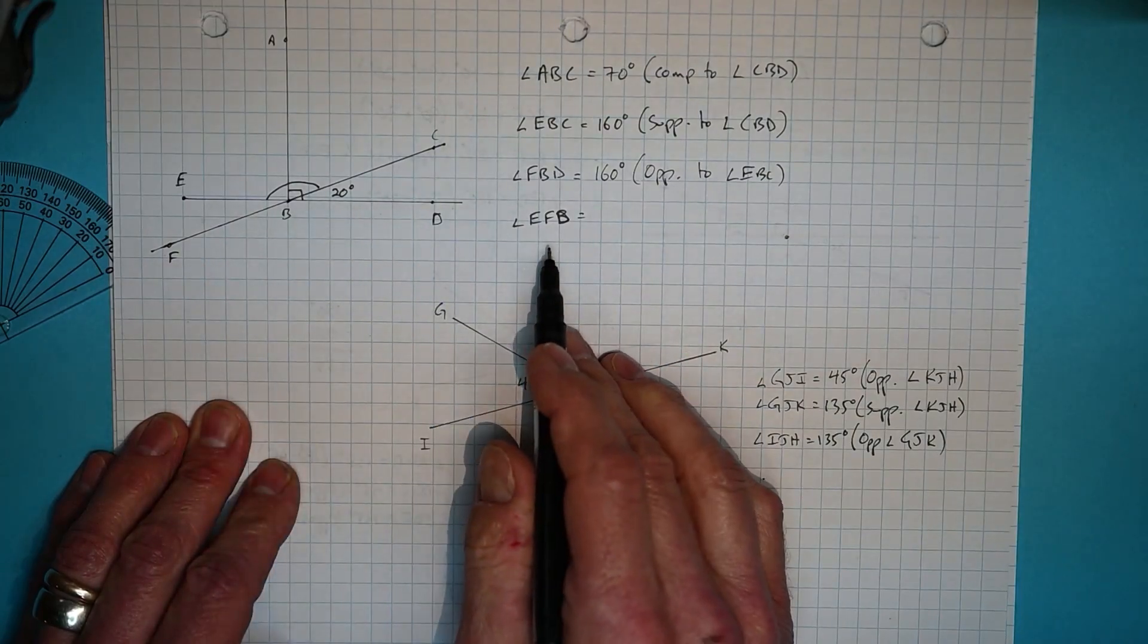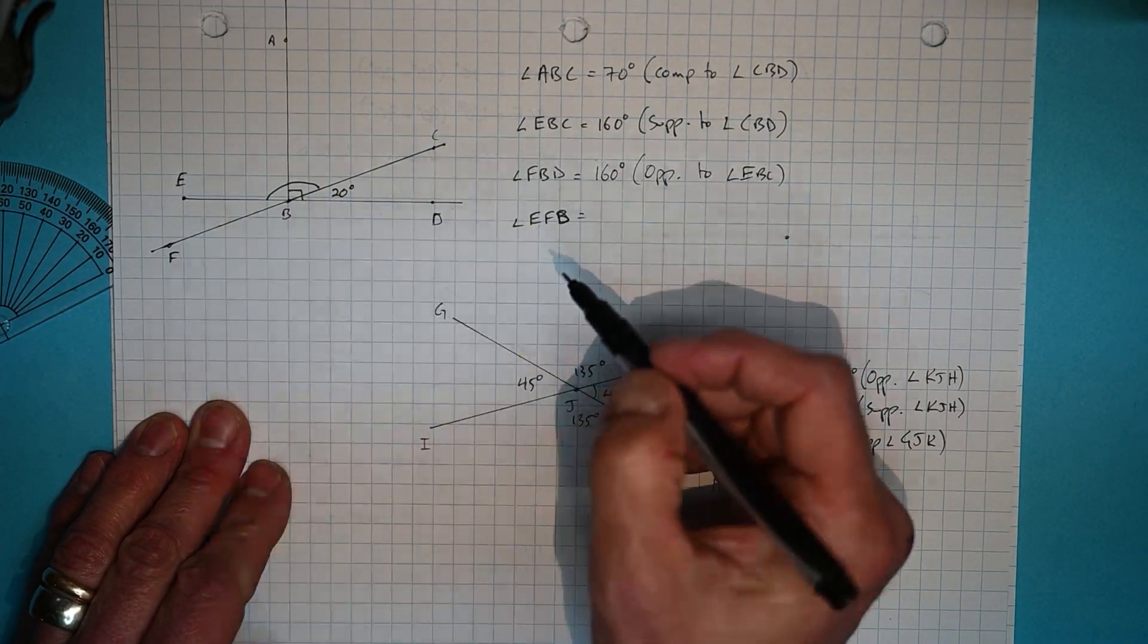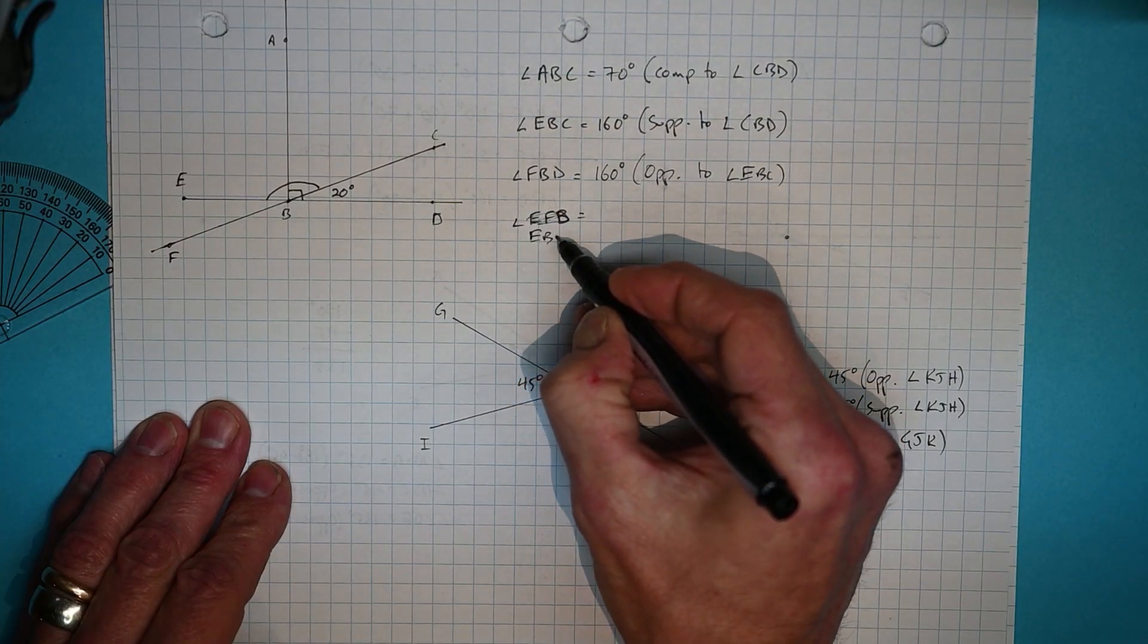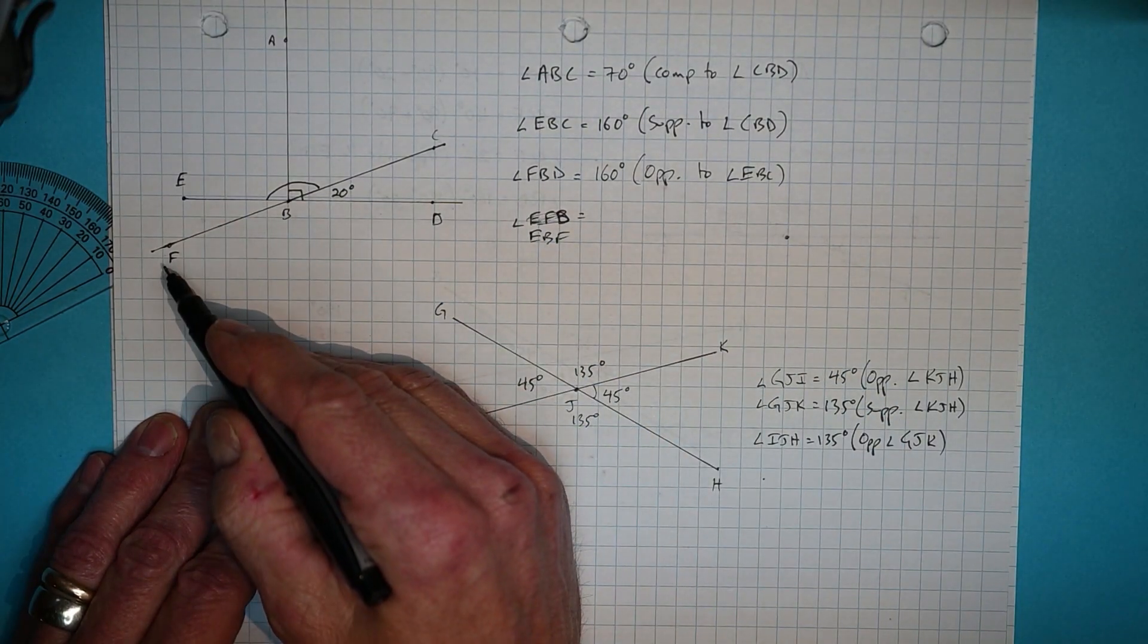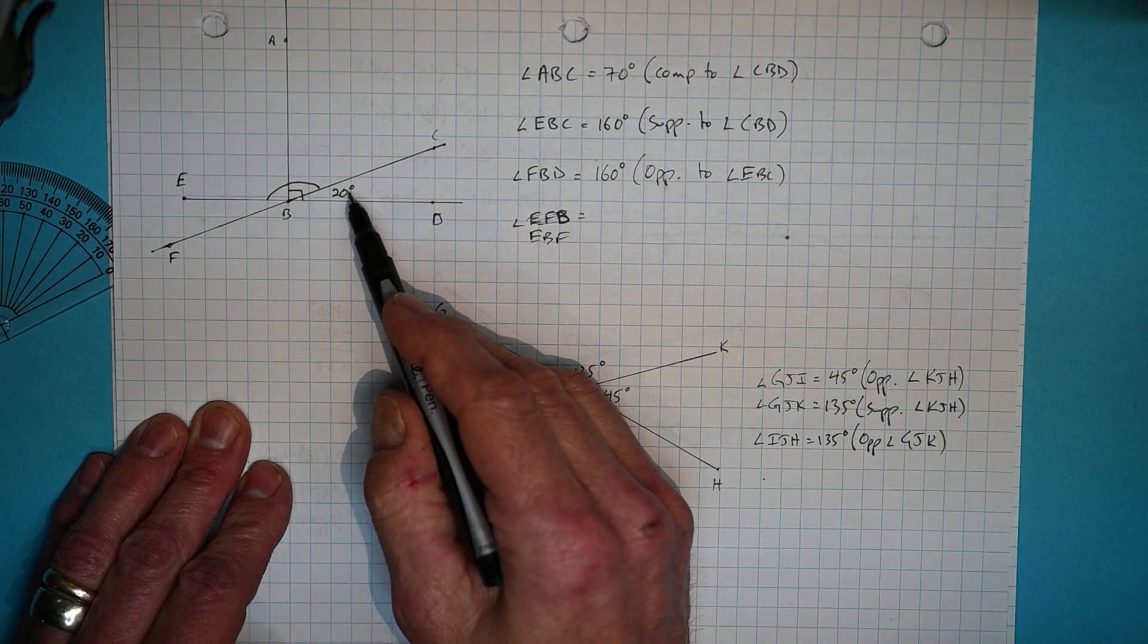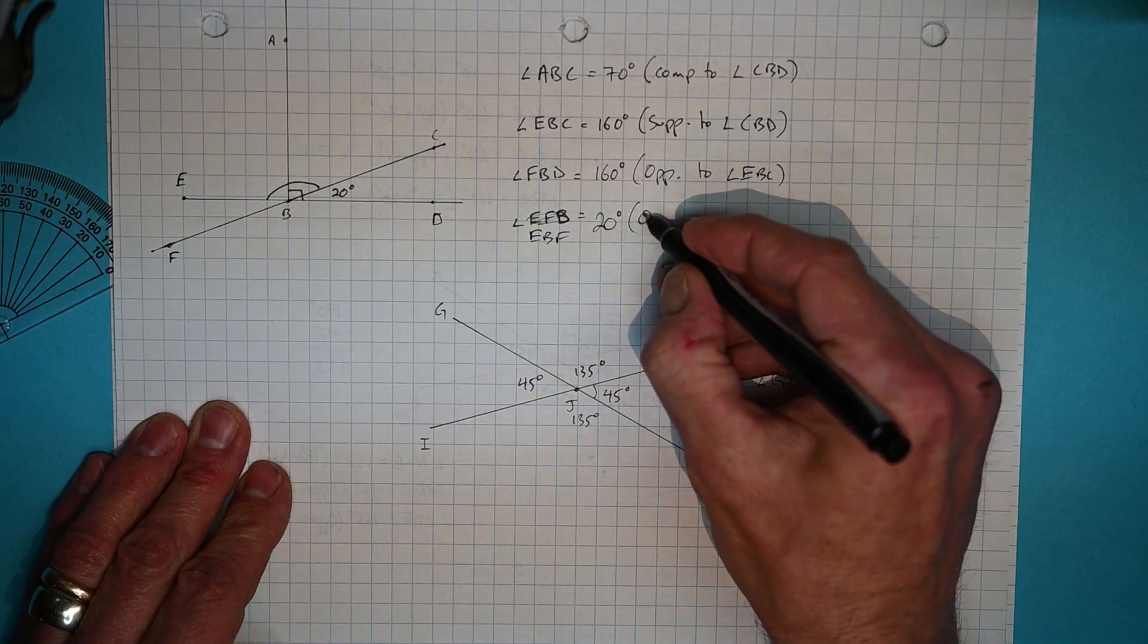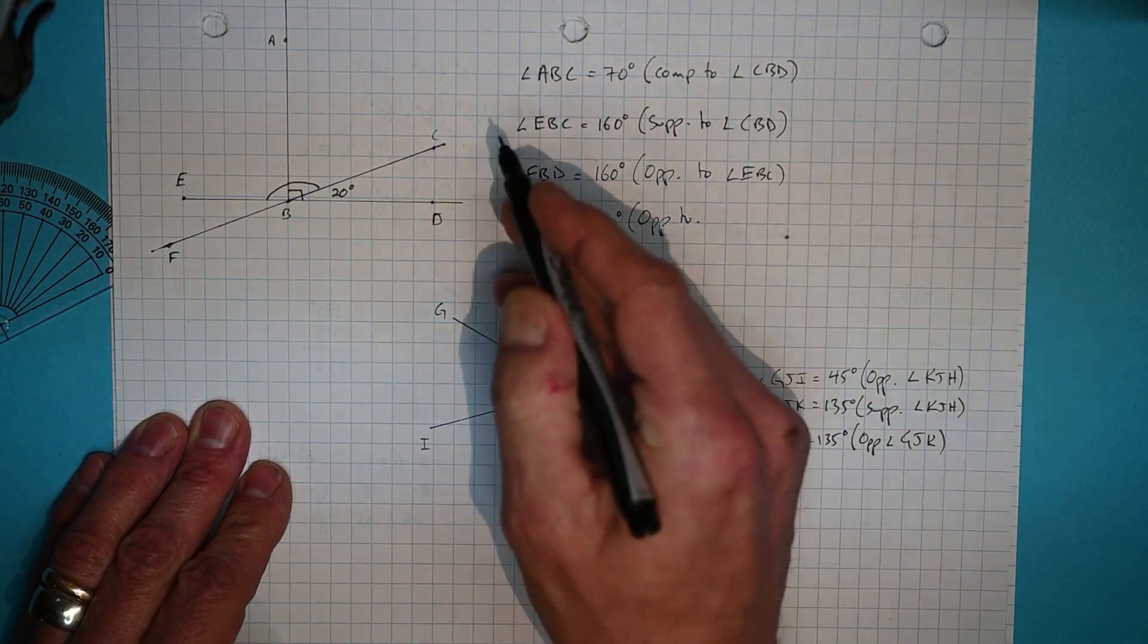And then similarly, this final one. Oh, I should have written that as EBF by the way. My apologies. EBF is also opposite to this angle. And so it's 20 degrees because it is opposite to CBD.